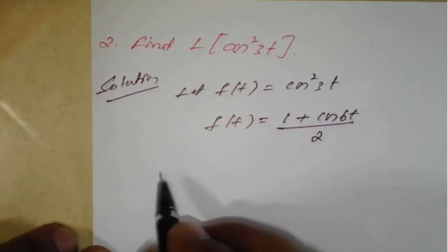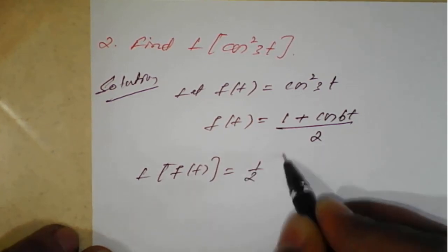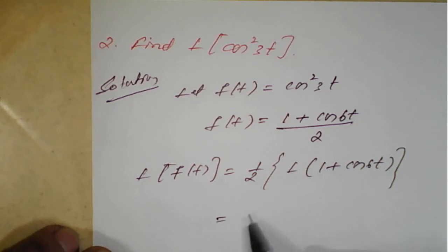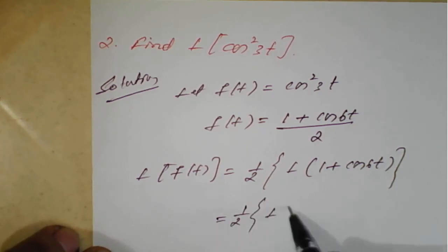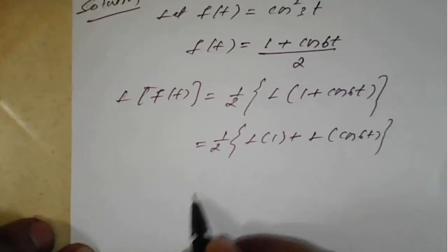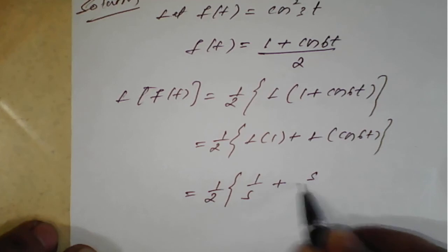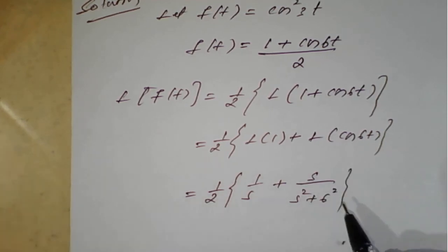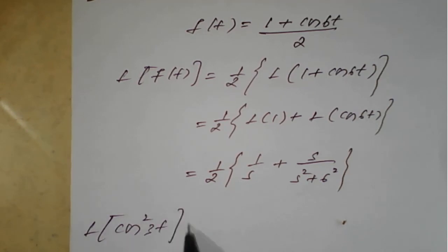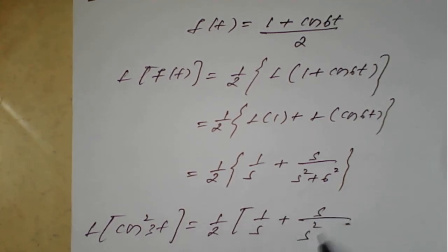Taking Laplace on both sides: L{f(t)} = (1/2)·L{1 + cos(6t)} = (1/2)·[L{1} + L{cos(6t)}]. Therefore, L{cos²(3t)} = (1/2)·[1/s + s/(s²+36)]. Here we don't need any shifting property.